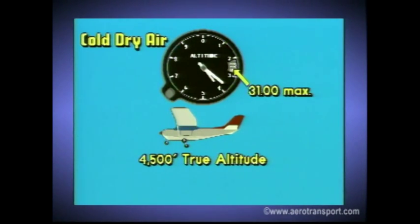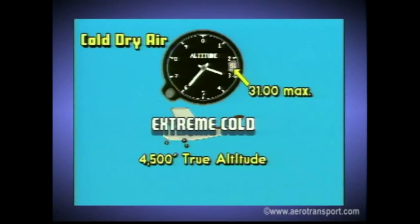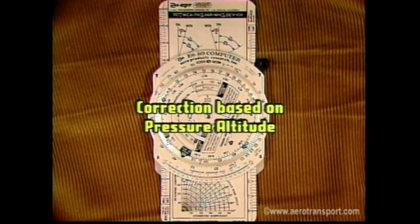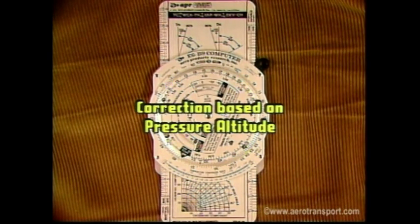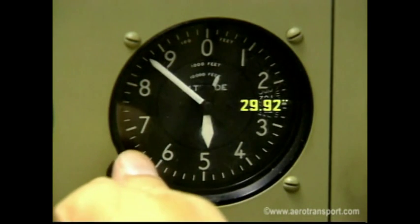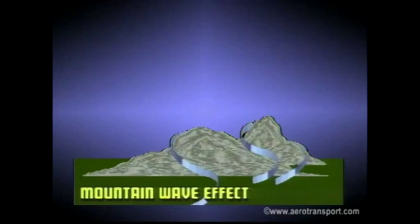Under these conditions, leave the instrument set at 31 inches. Air traffic control will issue the actual altimeter setting. Because the altimeter is calibrated to indicate true altitude in standard atmospheric conditions, temperature errors can occur. Extremely cold temperatures can produce an altimeter error of as much as 20%. Use your flight computer to correct the temperature error; this correction will be based on pressure altitude, not the indicated altitude. To find the pressure altitude at any given time, simply set the barometric scale to 29.92. Mountains can affect the operation of the altimeter, resulting in readings that are as much as 3,000 feet too high.